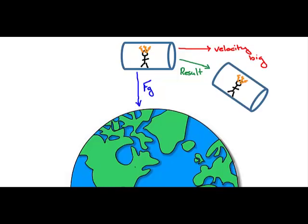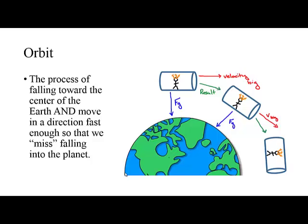Now, is she feeling a force due to gravity here? Yeah, but she's still moving to the right very, very quickly. The result is that she continues to fall over the edge of the Earth. She does fall towards the center of the Earth, but she's also moving to the right or the left very, very quickly. And so, Dr. Nyberg in the International Space Station, she is in orbit. And the orbit is the process of falling towards the center of the Earth and moving incredibly fast in one direction. So fast that you actually fall over or miss the edge of the planet.